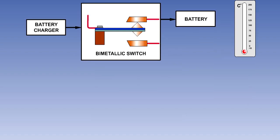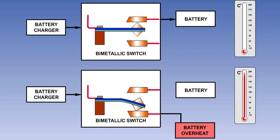Bimetallic switches are often used in battery charging circuits. The switch is placed in close proximity to the battery to monitor its temperature. Should the battery temperature become excessive, the switch will operate to shut off the charging current and activate a warning light.